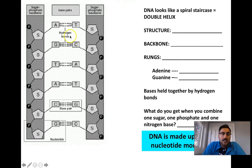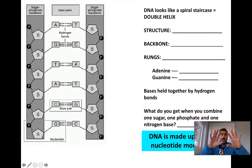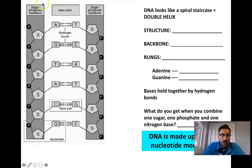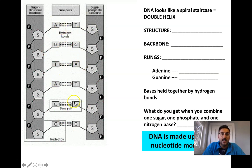If we unwind the helix and lay it out flat, we've got one backbone on one side and another backbone on the right-hand side, and then the base pairs in the middle — A, T, C, G — all in alternating orders. And that's where the magic lies.